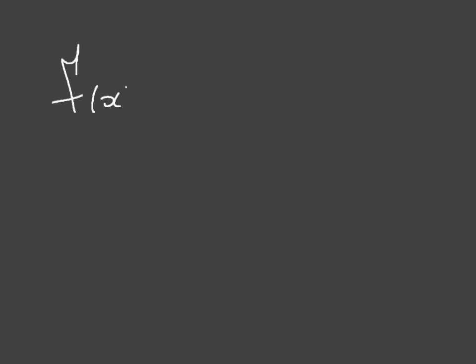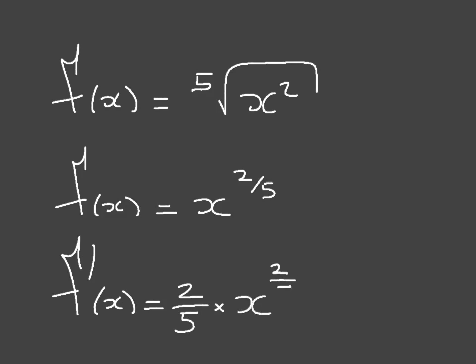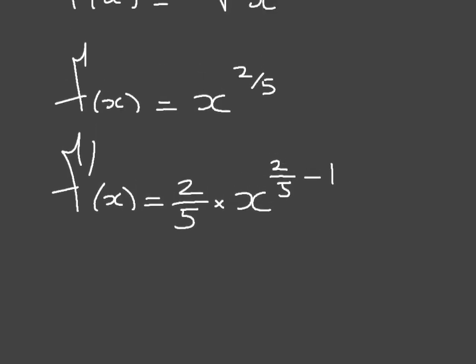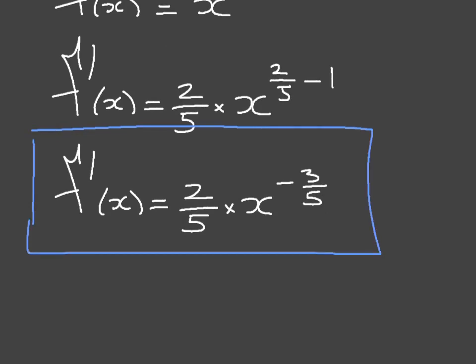Let's look at another example. Differentiate f of x equal to the fifth root of x squared. This is the same as f of x equals x to the power of 2 over 5. Using the power rule, the derivative f dash of x is equal to 2 over 5 times x to the power of 2 over 5 minus 1. Since 2 over 5 minus 1 is negative 3 over 5, this leads to f dash of x equal to 2 over 5 times x to the power of negative 3 over 5.